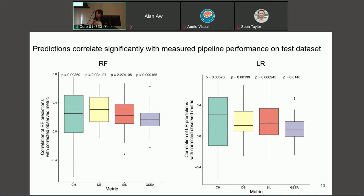And so after we predicted on the test set, which consisted of 30 percent of the 86 single cell RNA sequencing datasets, so we have 25 new datasets in our test set, we found that predictions on our test set actually correlate significantly with the measured pipeline performance on the test dataset. So you can see on the x-axis for both of our box plots here, we have the metric that the respective models are trying to predict. And on the y-axis we have the correlation between the model's predictions and the observed metric value. So both of these models were able to predict with correlation significantly above zero across all four metrics and this was measured using the Wilcoxon rank sum test.